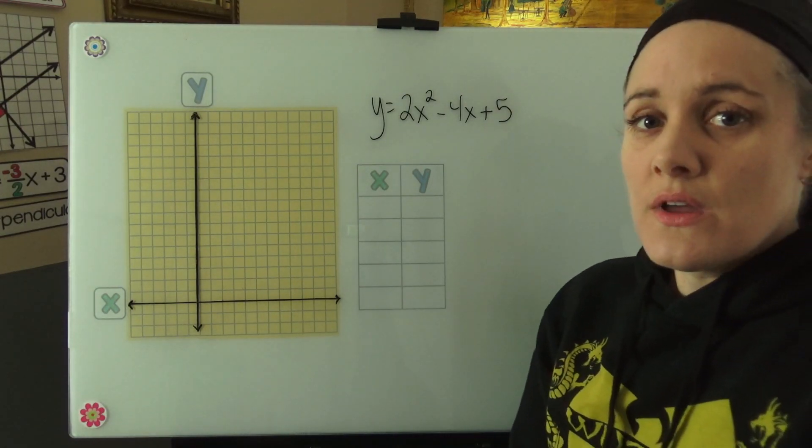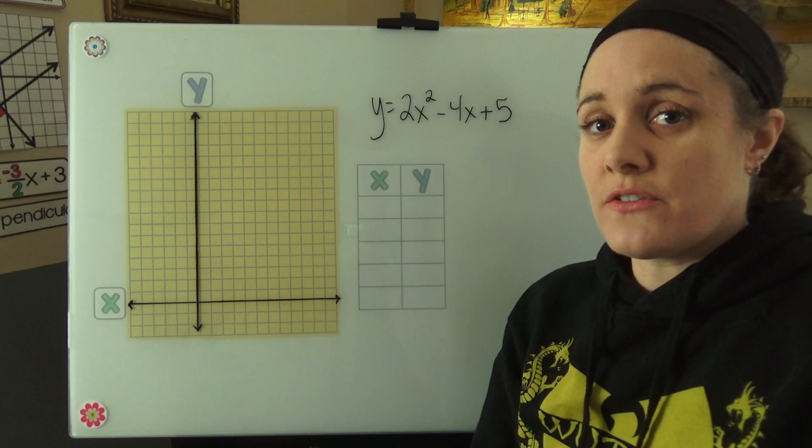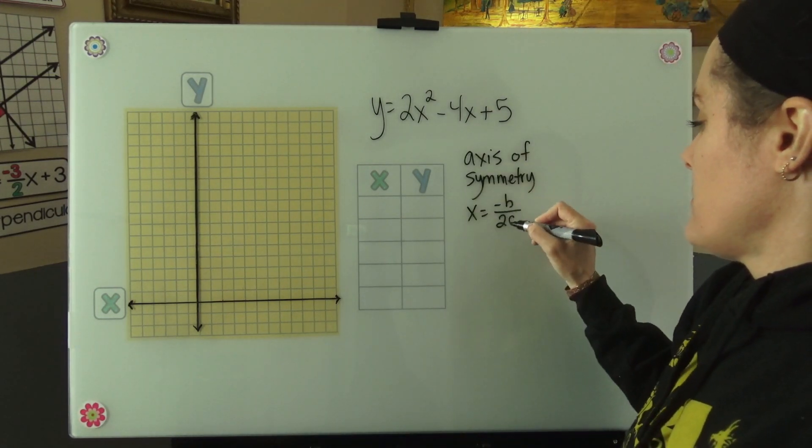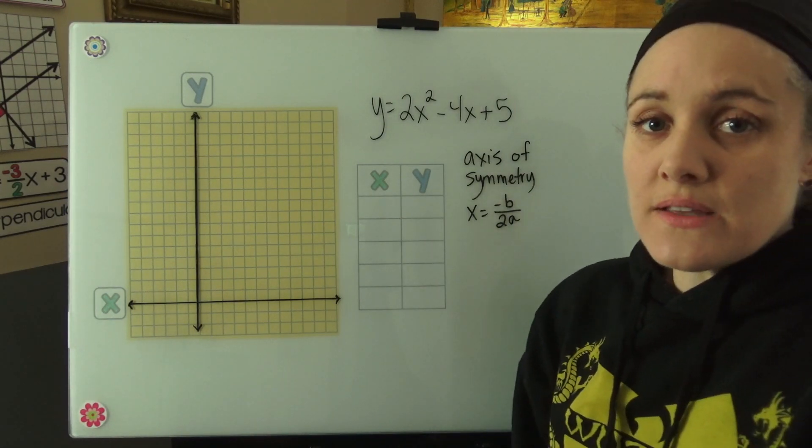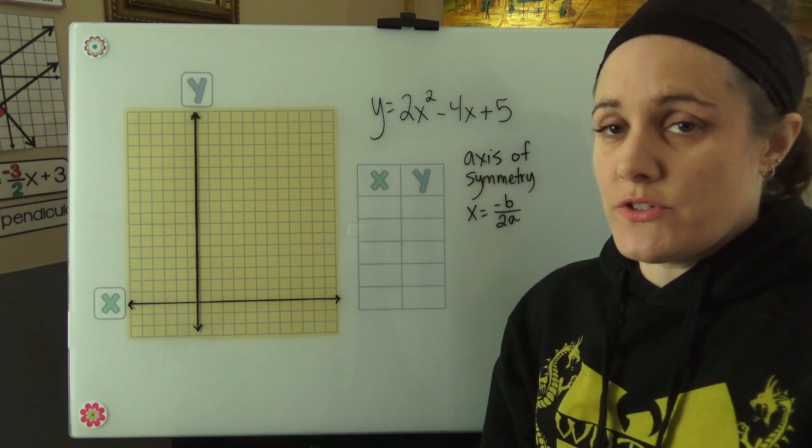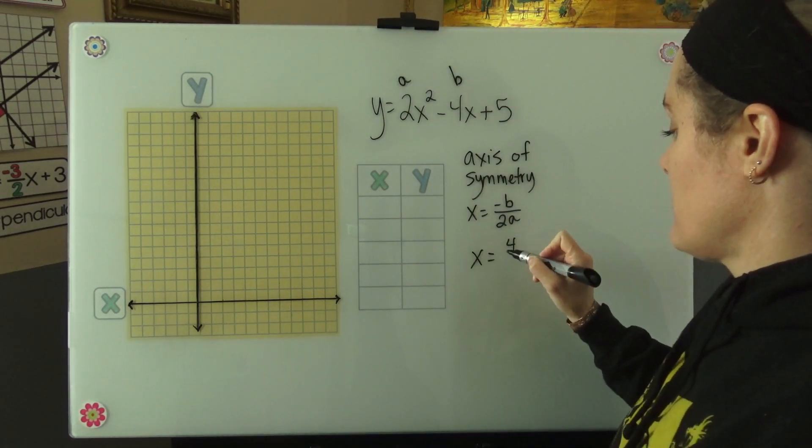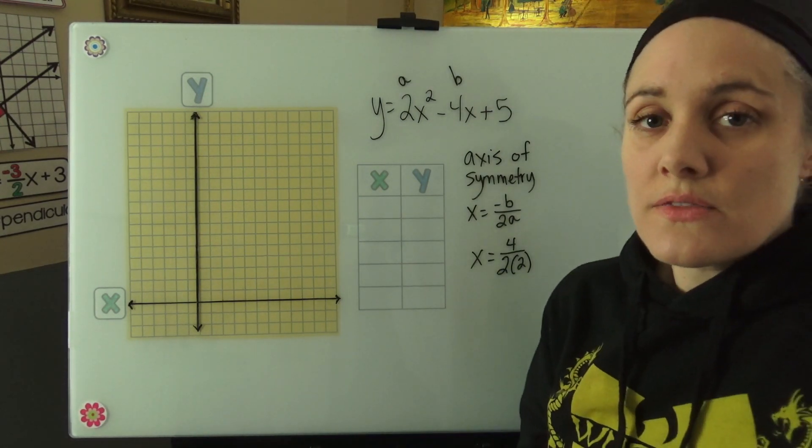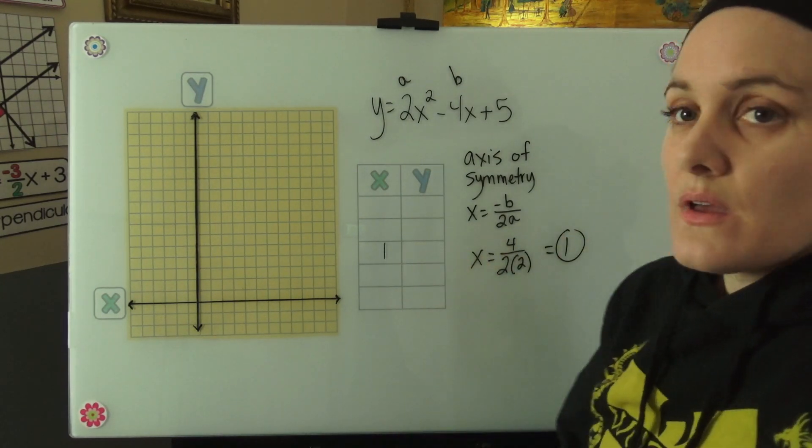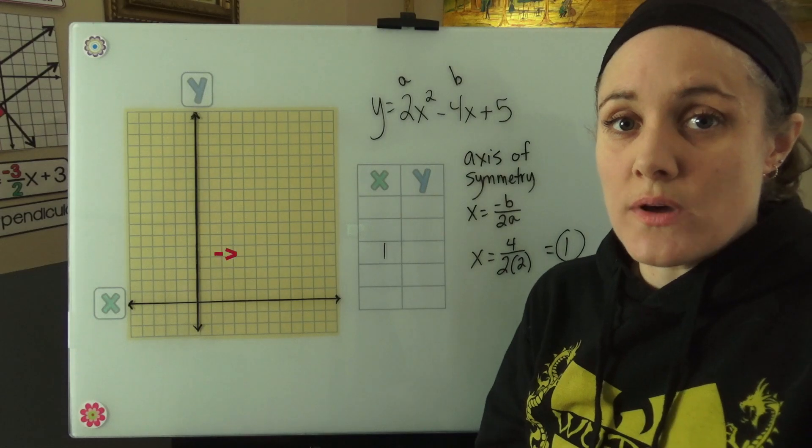So the first thing I want to do is use the axis of symmetry to find the x value at the vertex. I'm going to replace a and b in my axis of symmetry formula with a and b from my quadratic. Then I'm going to simplify my fraction. I know that the x coordinate at my vertex is 1.